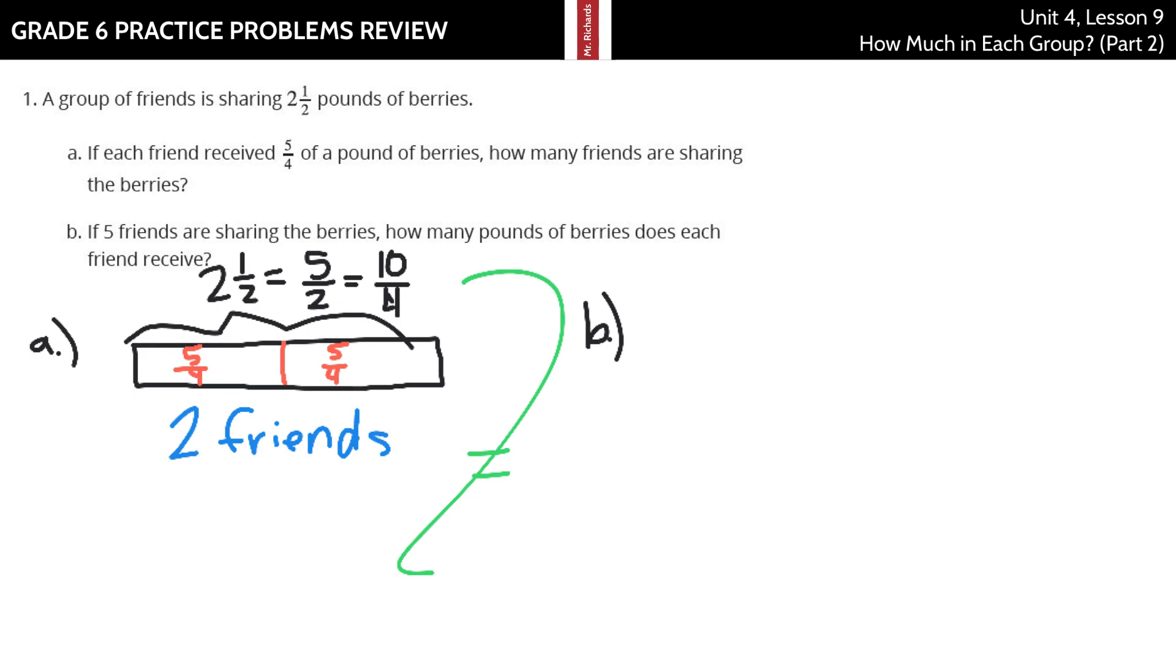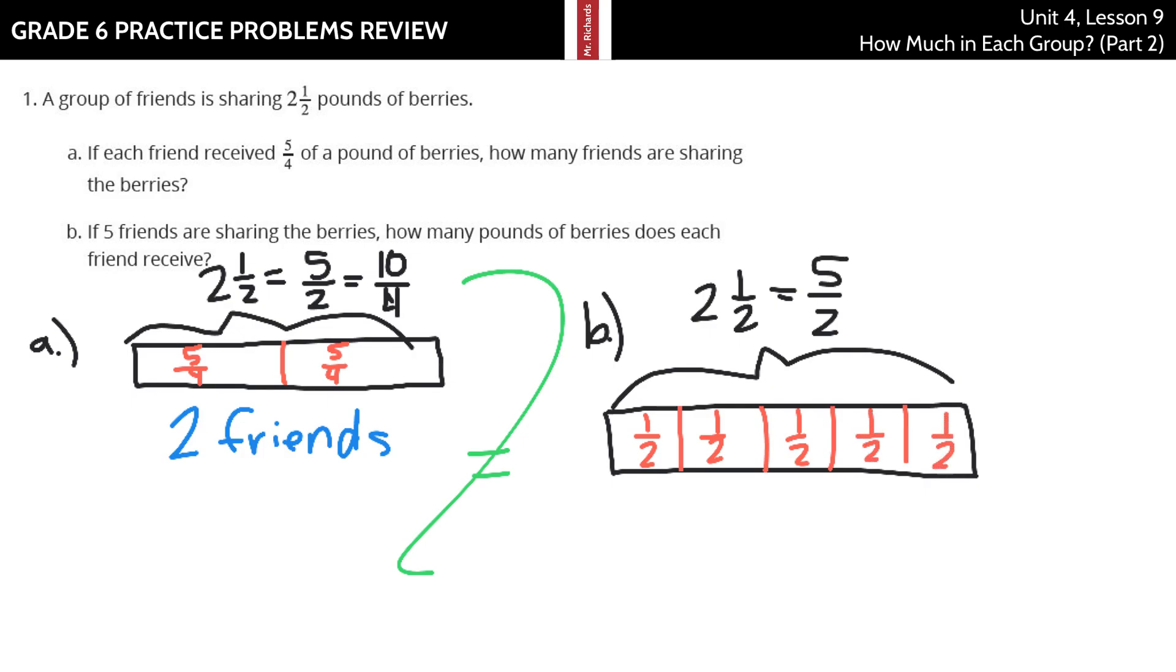If 5 friends are sharing the berries, how many pounds of berries does each friend receive? Let's start off with something very similar here. This is again still 2 and a half pounds, which is 5 halves. 5 friends. 1, 2, 3, 4 lines gives me 5 friends. Each of these is going to be 1 half, because 1 half, 2 halves, 3 halves, 4 halves, 5 halves. So how much does each friend get? Half of a pound. I could really go for some berries right now.